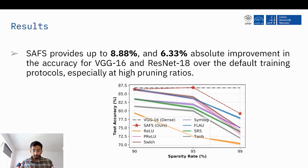Using this two-step process, we are able to demonstrate 8.8% and 6.33% absolute improvement on VGG-16 and ResNet-18, especially at high pruning ratios.